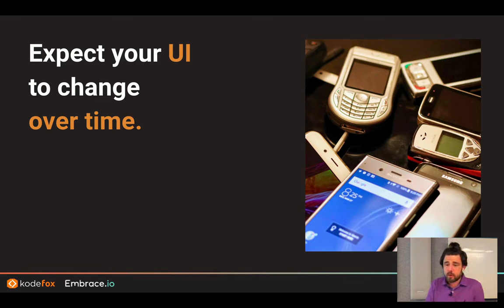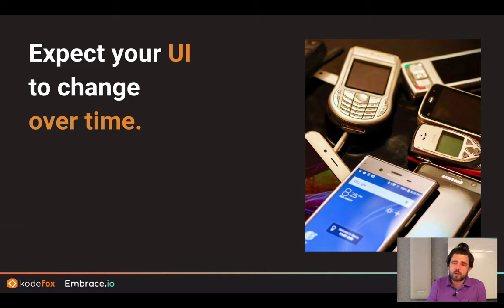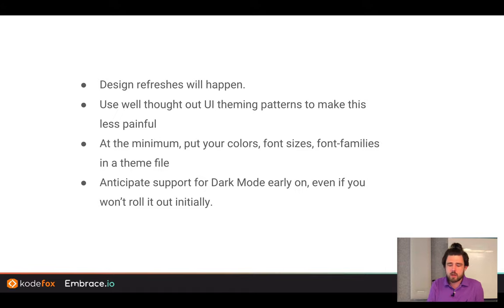UI is going to change over time. Nokia was king back then — incredible market share, incredible product — but now they're gone. They couldn't innovate when the smartphone revolution came. Design refreshes are going to happen and happen often. If you use well-thought-out UI theming patterns, that'll make this less painful. Think about when Dark Mode came out and companies were scrambling. The companies that made good theming architecture decisions early, used the right theming libraries, are probably winning.